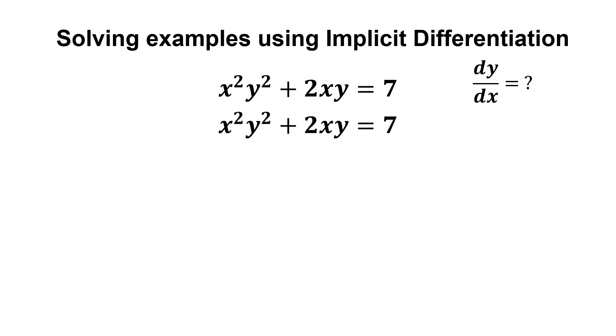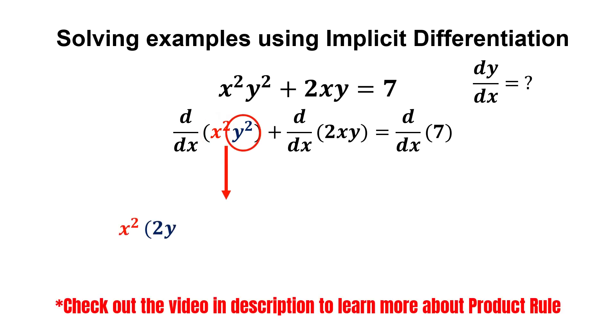Taking the derivative on each term, we start by differentiating the first term. Notice that we have the product of x² and y², so we use the product rule. Copy back the first term, x², and multiply it by the derivative of the second term,